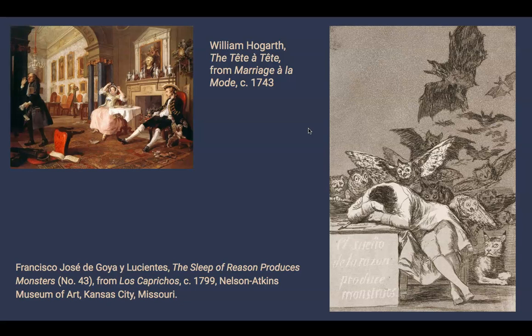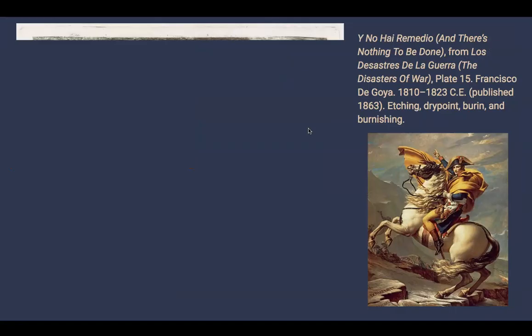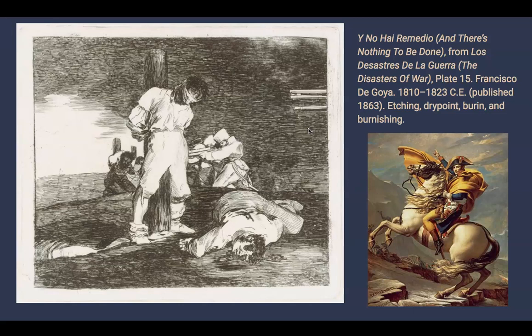Through the print, Goya warns the viewer of what is sure to happen if they do not keep their wits about them at all times. Unfortunately, Goya would live to see the results of The Sleep of Reason, which brings us to his print series The Disasters of War. The French Revolution ended when Napoleon Bonaparte — whom we see here in this very Romantic painting by Jacques-Louis David — rose to power in 1800 at the tail end of the French Revolution, and waged war on much of continental Europe until 1815, including Spain beginning in 1808.